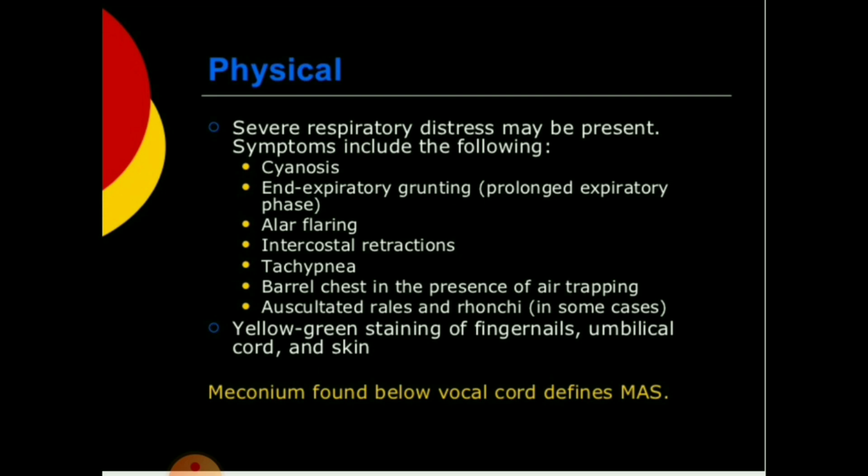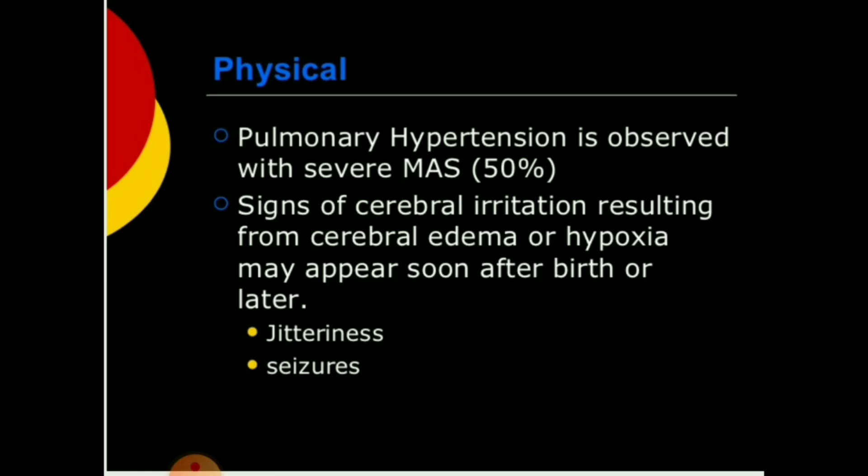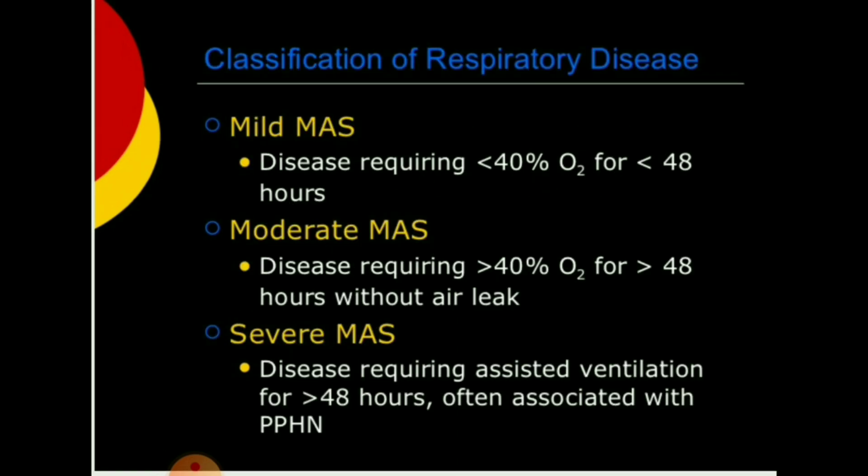Yellow-green staining of fingernails, umbilical cord, and skin may be observed. Meconium found below the vocal cords defines MAS. Pulmonary hypertension is observed with severe MAS in 50 percent of cases. Signs of cerebral irritation from cerebral edema or hypoxia — including jitteriness and seizures — may appear soon after birth or later.